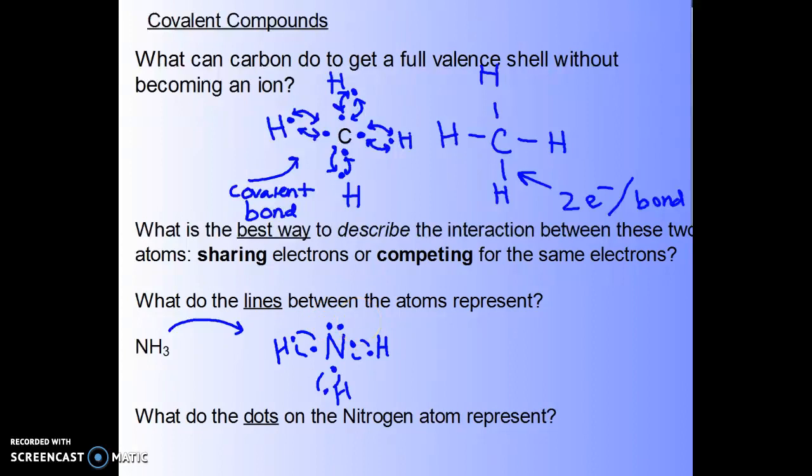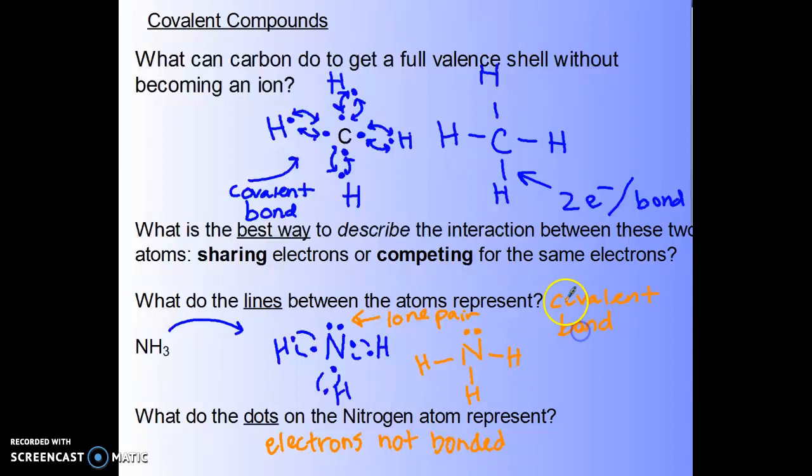We actually will call that a lone pair because it's all by itself. It's so lonely. And when we normally draw the molecule, we're going to draw the lines for the bonds. So we would represent it with our lone pair still drawn in dots and our three bonds connected to hydrogen. This is the Lewis structure for the molecule ammonia. And the lines represent our bonds. The dots represent our lone pair. These are electrons that are not bonding. So the dots on the nitrogen atom represent electrons not bonded. The lines represent a covalent bond.